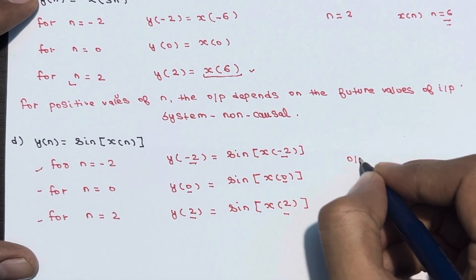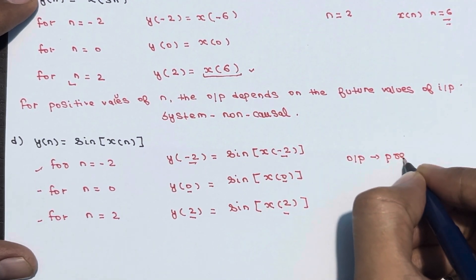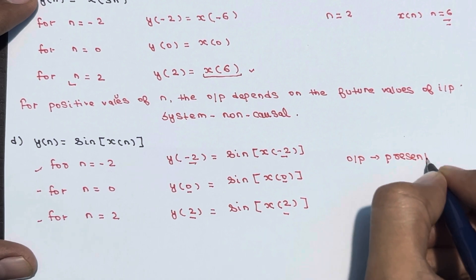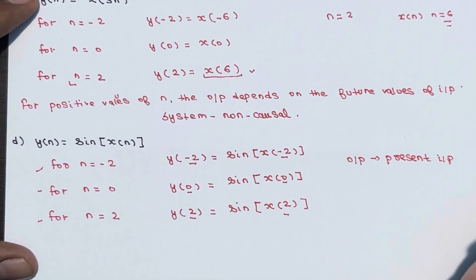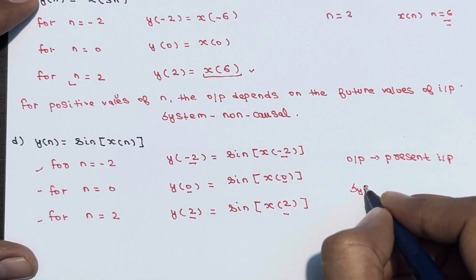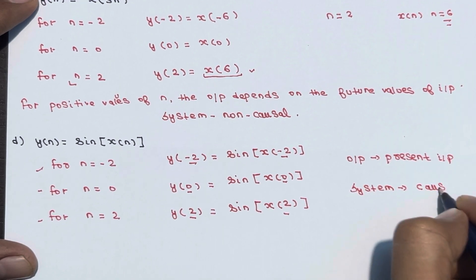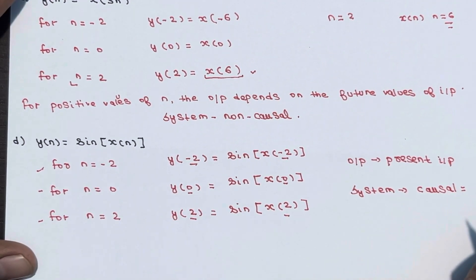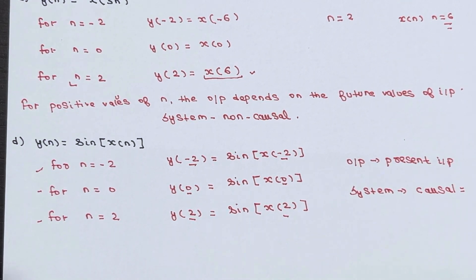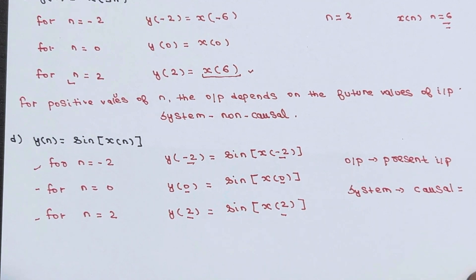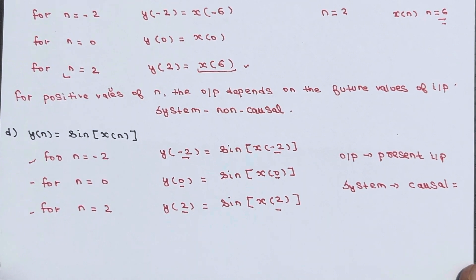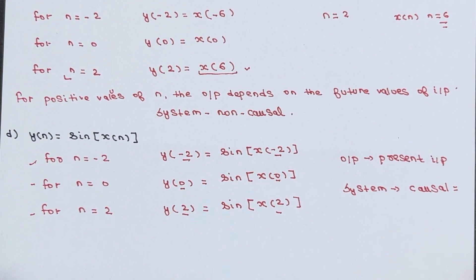Since the output depends upon the present value of input, the system is a causal system. These problems are enough to check whether a system is causal or not. If you have any questions, ask in the comment section and don't forget to subscribe to our YouTube channel. Thank you.